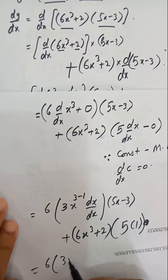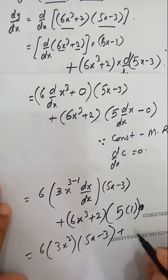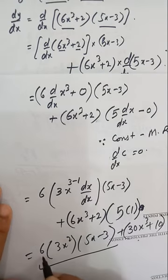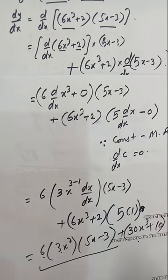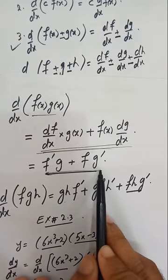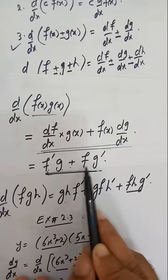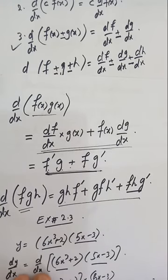So we get 6·3x² multiplied by (5x − 3), plus (6x³ + 2) multiplied by 5. Expanding: 18x²(5x − 3) + 5(6x³ + 2), which simplifies to 30x³ + 10. Multiply and collect terms to get the final derivative. This shows how the product rule works when two functions are in product. You can prove this rule from the first principle as shown in your textbook.